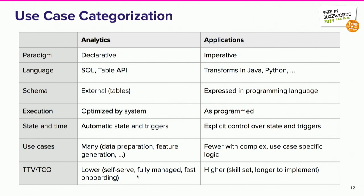Many things are automatic when you use those APIs — optimizations are done by the system, and state, triggers, and time are managed automatically. What you get as the user is a faster implementation time. In the case of Lyft we have combined Flink SQL with a management platform that also takes care of all the deployment of Flink jobs, so to the user there's no Flink — it's just a declaration for the job.